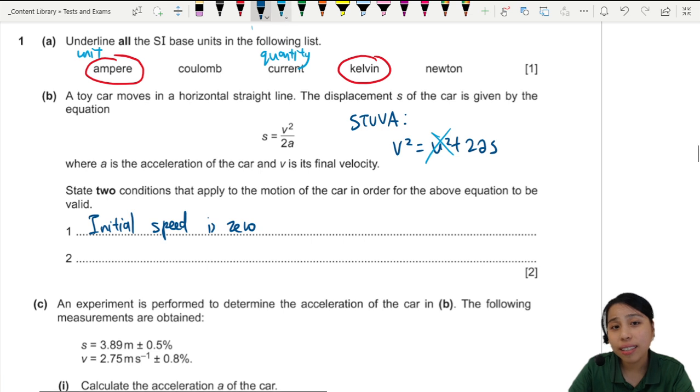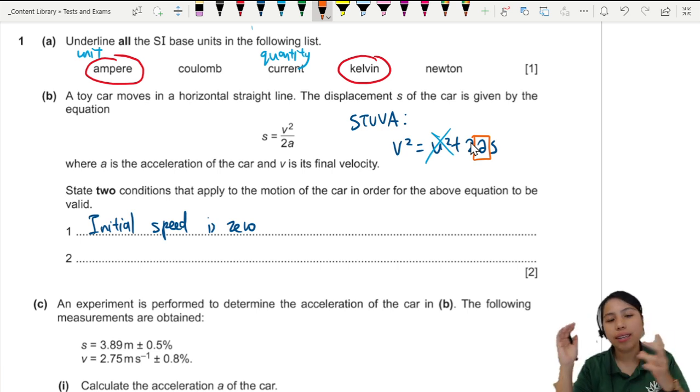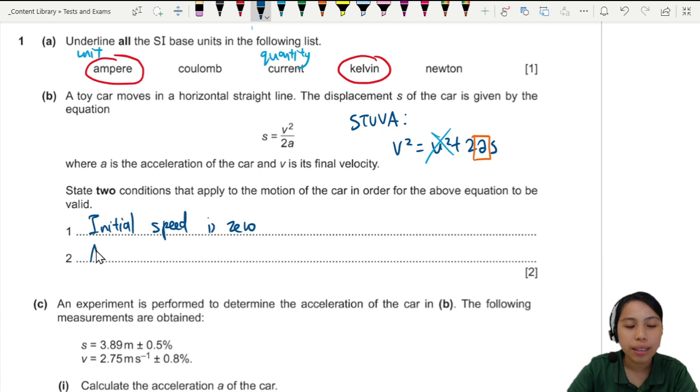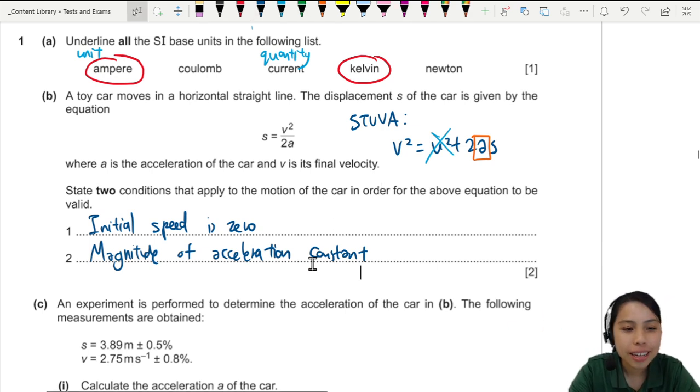Then, another thing is, very importantly, when you see this A, this is for linear motion, which means you can have acceleration, but it has to be constant in the same direction. So you can also say that the magnitude of acceleration must be constant. Acceleration constant. If it's 9.81, it's 9.81. Don't start changing halfway. Otherwise, you can't use your SUVAT.